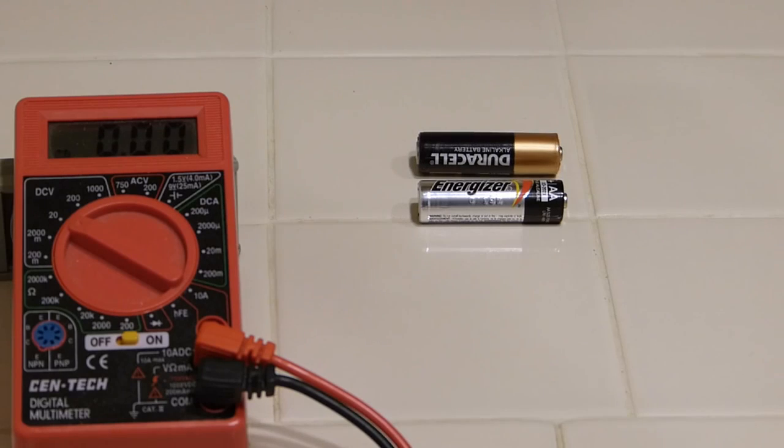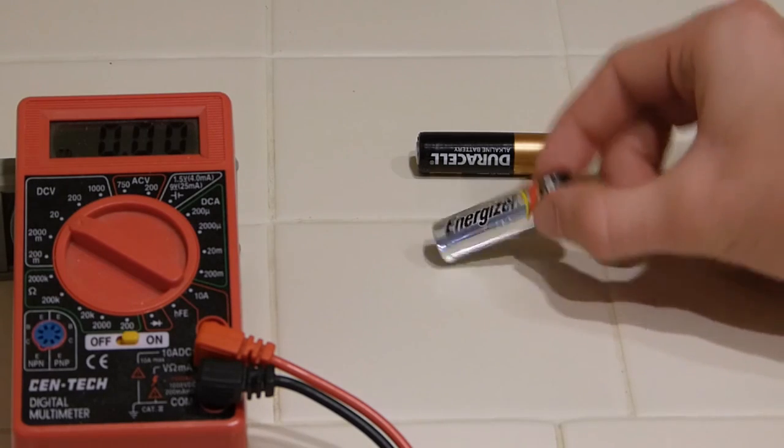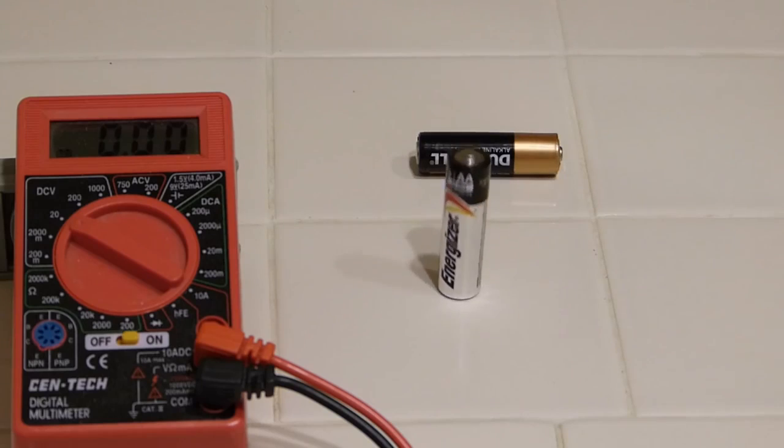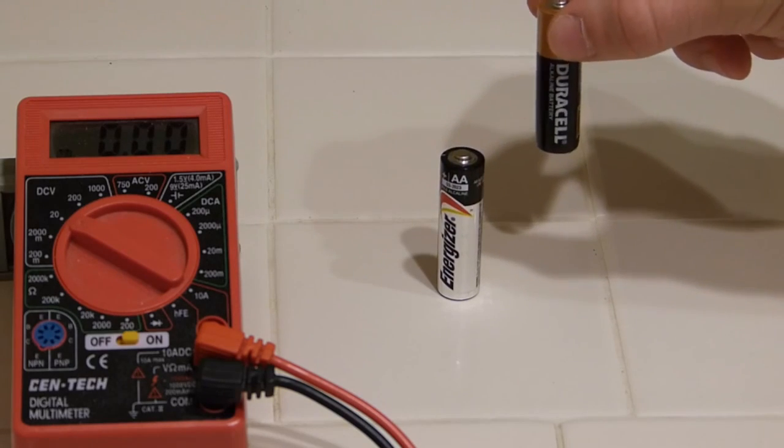Without a meter, how could we tell the difference? With a simple bounce test, a good battery will not bounce and it will end with a thud and frequently stand up. A bad battery will take several bounces and usually fall over.